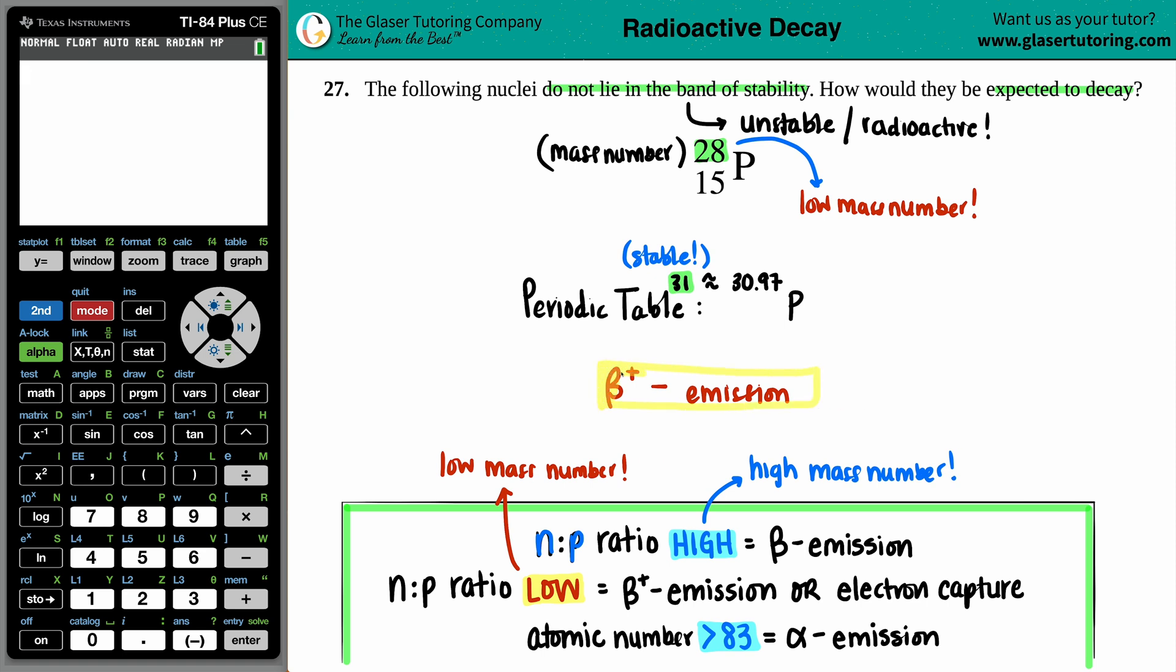Maybe this was a multiple choice for you. If this was a multiple choice and they didn't have the positron emission answer and they had electron capture, you would choose that one. Just kind of showing you the difference, but either one is good.